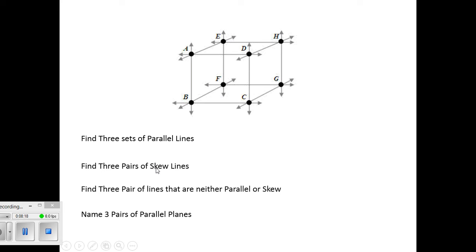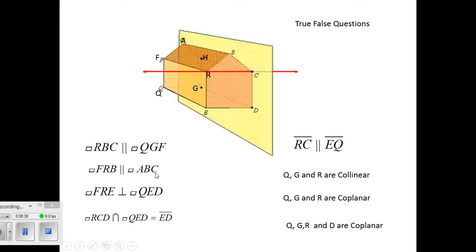And find three pairs of skew lines. Well, again, skew is non-parallel and non-intersecting and not in the same plane. So CG is skew with AD. That'll work, right? BC is skew with AE. Maybe you can find some more.